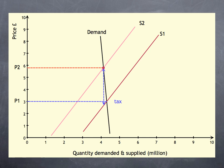But the consumer ends up paying £2.80 of the tax, and the supplier only £0.20 of the tax. So, the incidence of tax is falling mainly on the consumer.